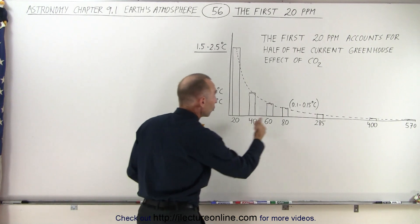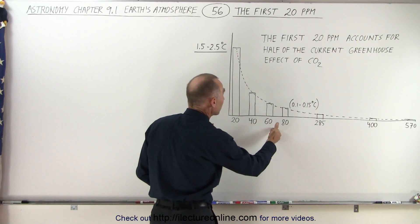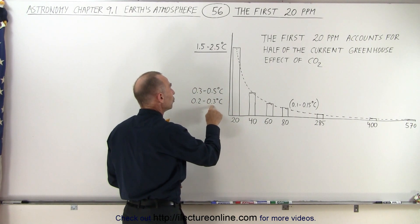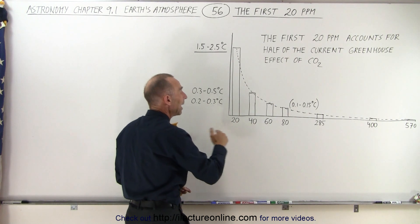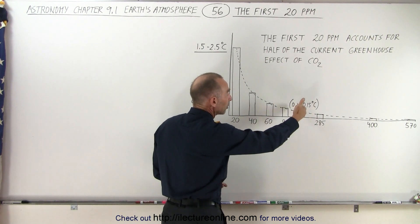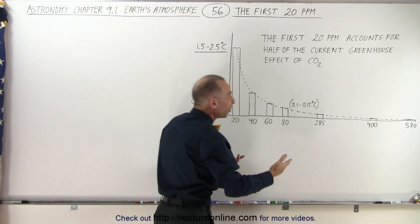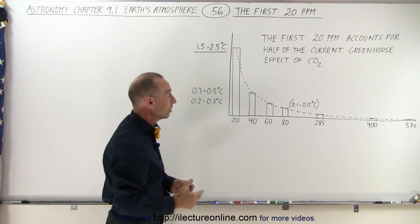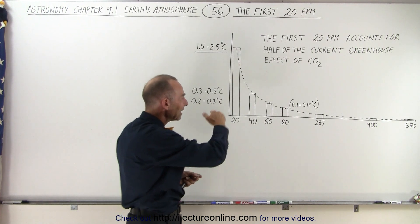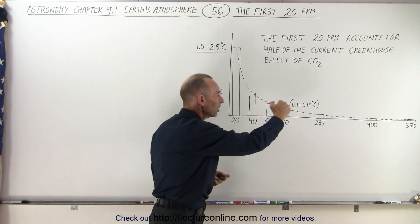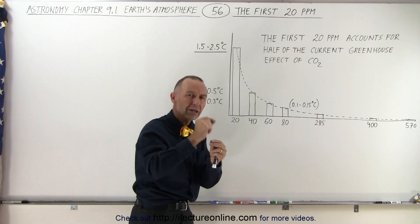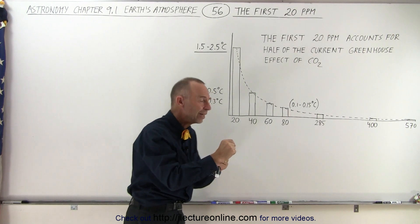And then for the next increase of 20 parts per million, the increase goes down to 0.2 to 0.3 degrees. And the next 20 parts per million, we are down in the 0.1 to 0.15 range. So you can see that adding additional carbon dioxide seems to have a smaller and smaller effect.